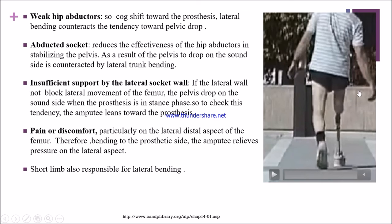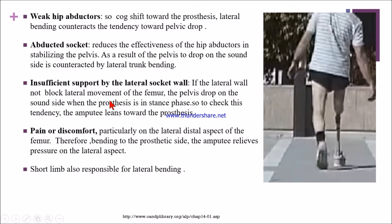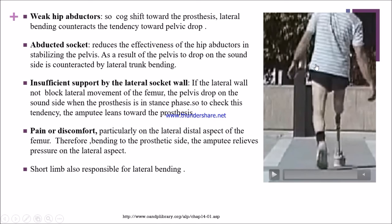If the socket is abducted, it reduces the effectiveness of hip abductors in stabilizing the pelvis. Normally the hip abductors stabilize the opposite pelvis. As a result of pelvic drop on the sound limb, the patient leans toward the amputated side to compensate. If there is insufficient lateral socket wall support — where normally the lateral wall is high and medial wall is low — the lateral wall does not block lateral femur movement, resulting in pelvic drop on the sound side. During stance, the patient counteracts with lateral trunk bending.